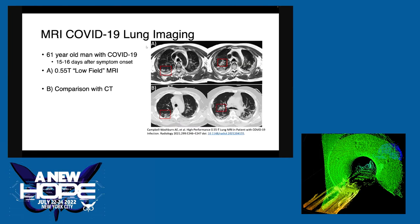This is some COVID-19 lung imaging. You can see some damage in the lungs, and the bottom is a comparison with a CAT scan. You can see the MRI has a lot nicer tissue contrast in the soft tissues, and it doesn't expose you to ionizing radiation — so that's a huge benefit of MRI.